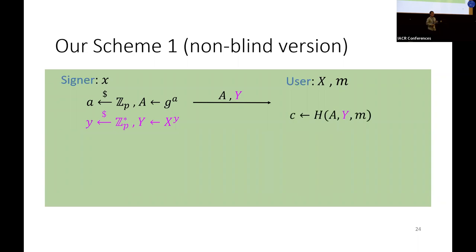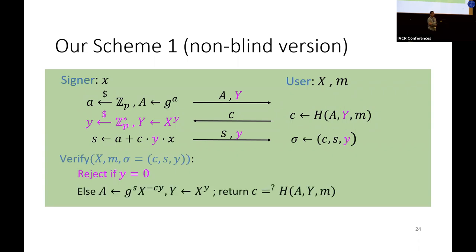Now, to compute the challenge, the hash function will also take the Y as input. Then the signer will set s to be a plus c times y times x. The final signature now is c, s, and y. To verify it, we just reject if y is equal to zero. Otherwise, we can recover A and Y from c, s, and little y, and then check whether the hash is consistent with the c value. One thing to notice here is that we do not allow y to be zero because it is easy to forge a signature for y equal to zero.